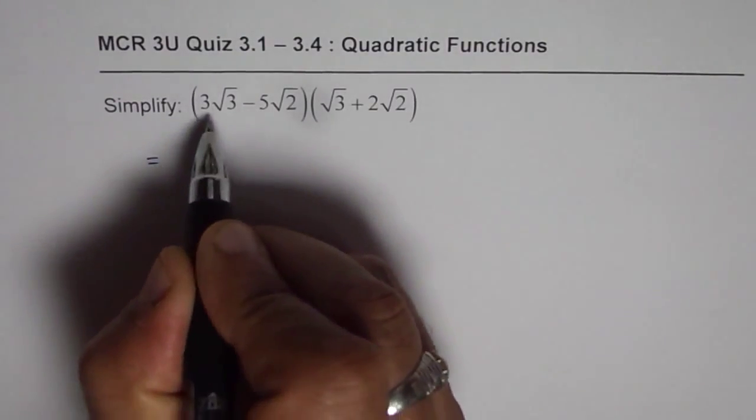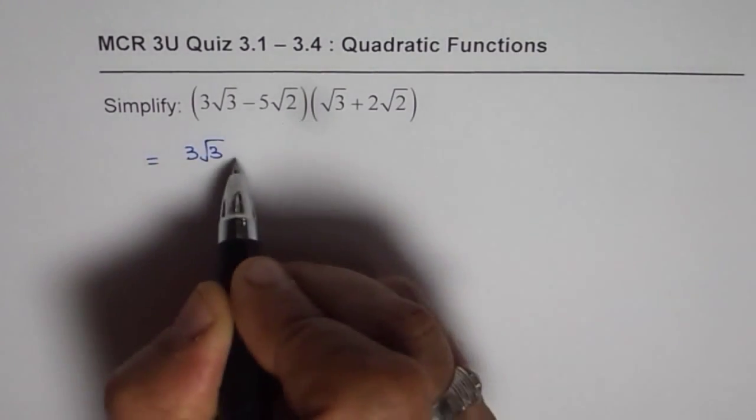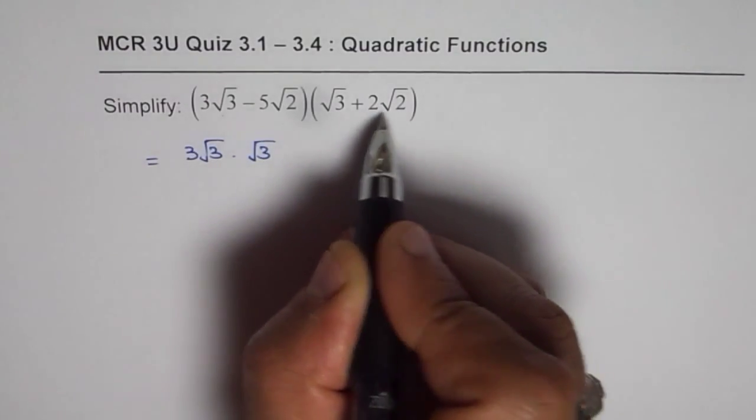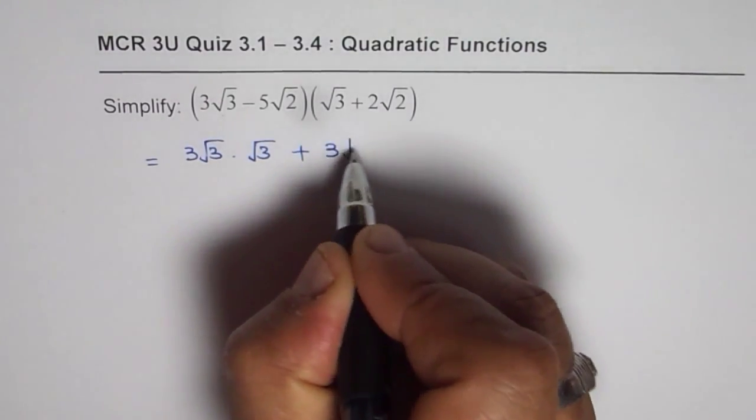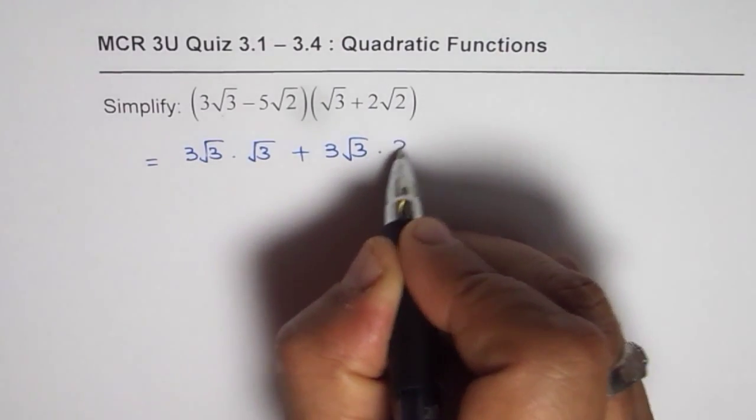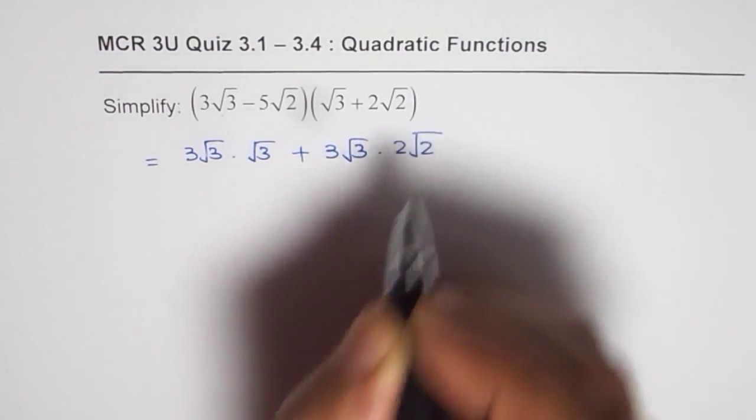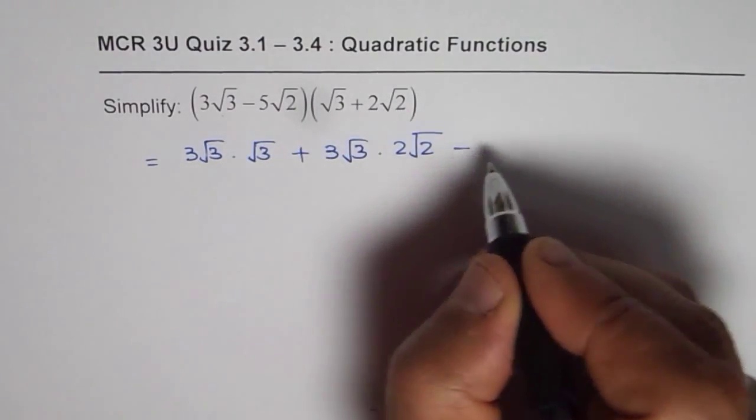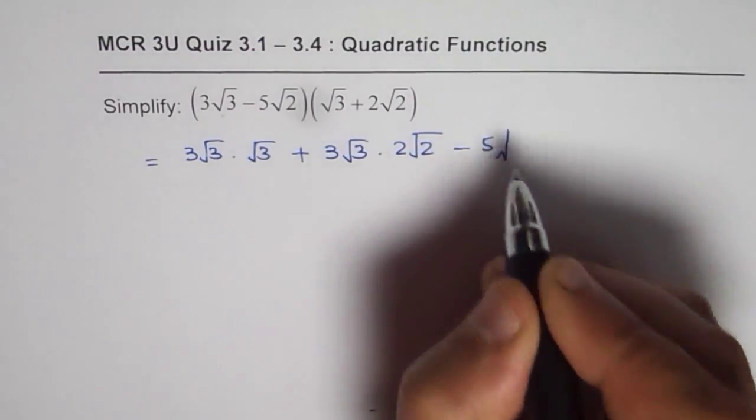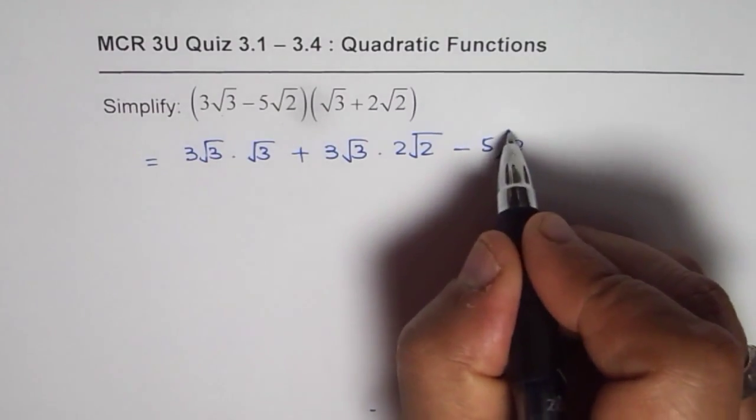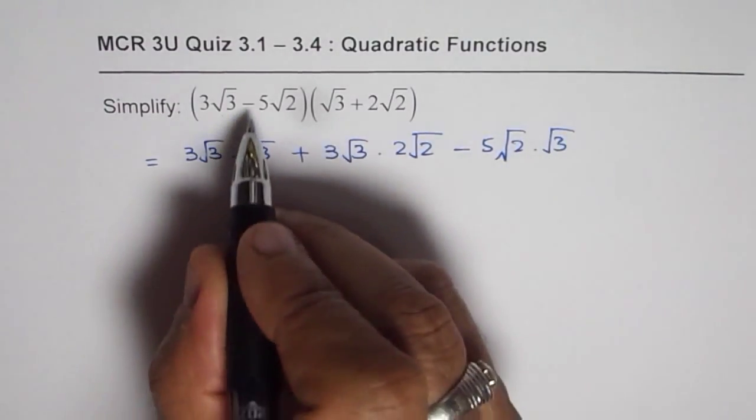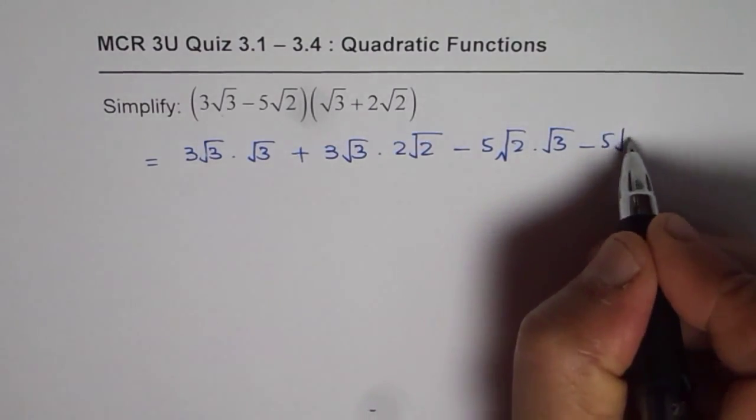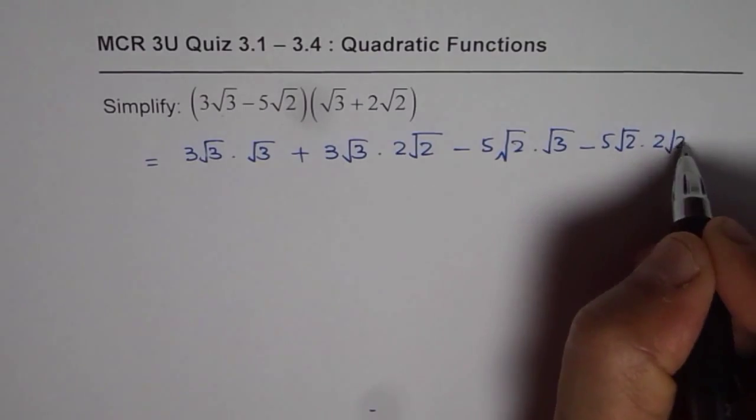We will get 3 square root 3 times square root 3. Then we will multiply 3 square root 3 by 2 square root 2, so we get plus 3 square root 3 times 2 square root 2. Then we will multiply this binomial by minus 5 square root 2. Let me first write 2 times square root 3. We will multiply them later. Then minus times plus is negative, so we get 5 square root 2 times 2 square root 2.